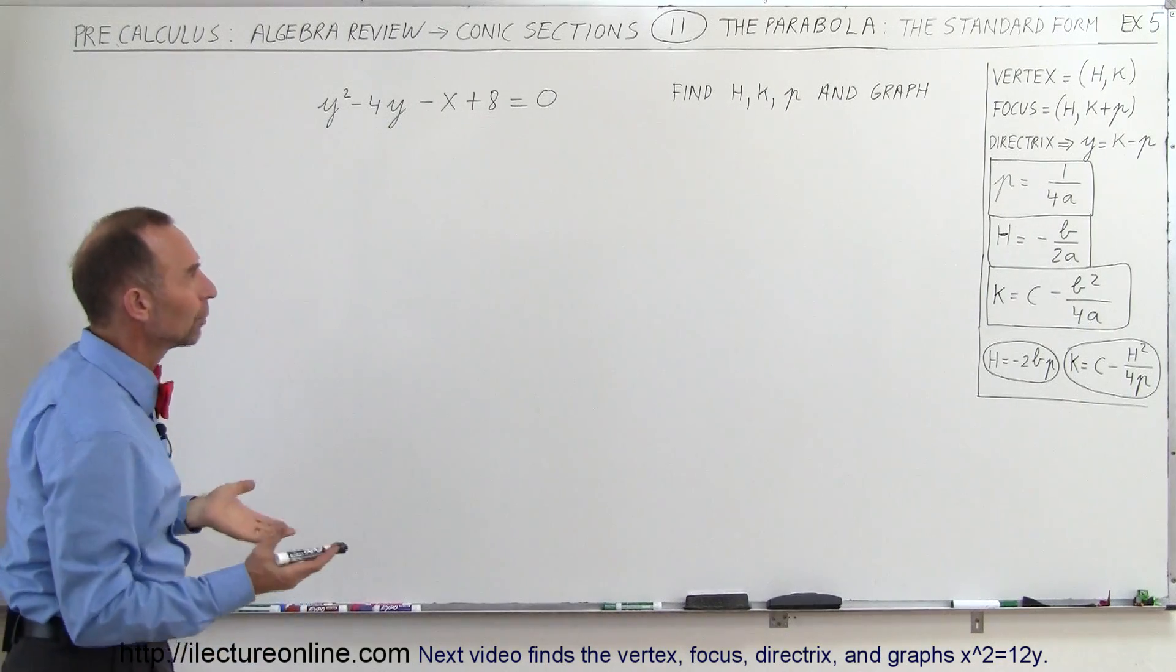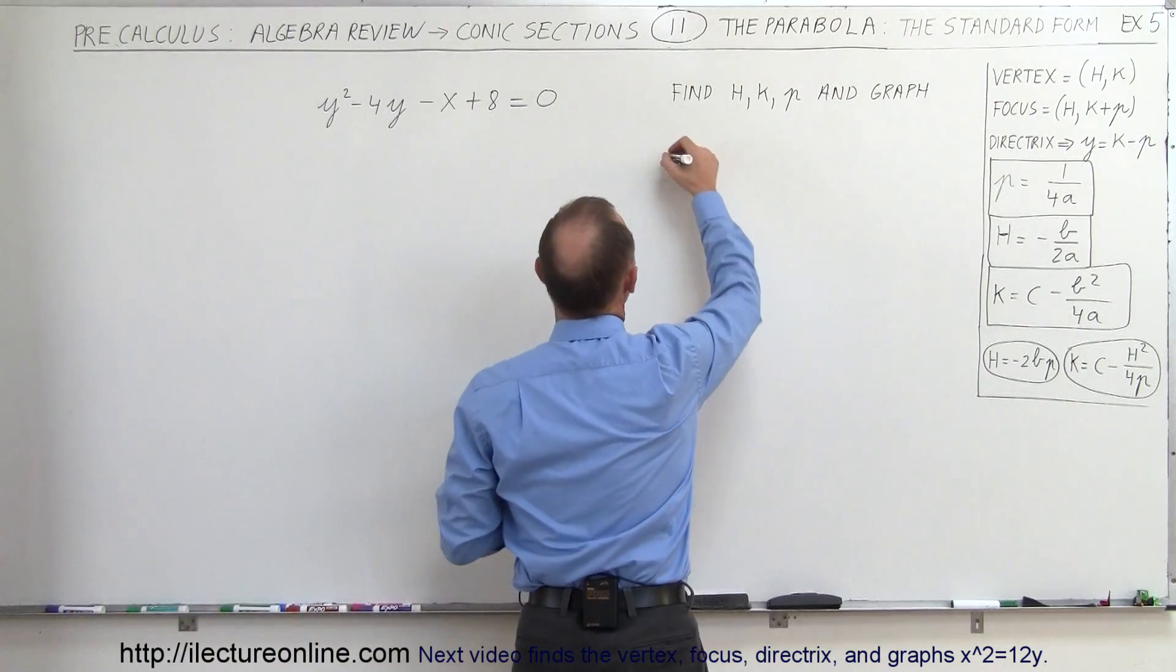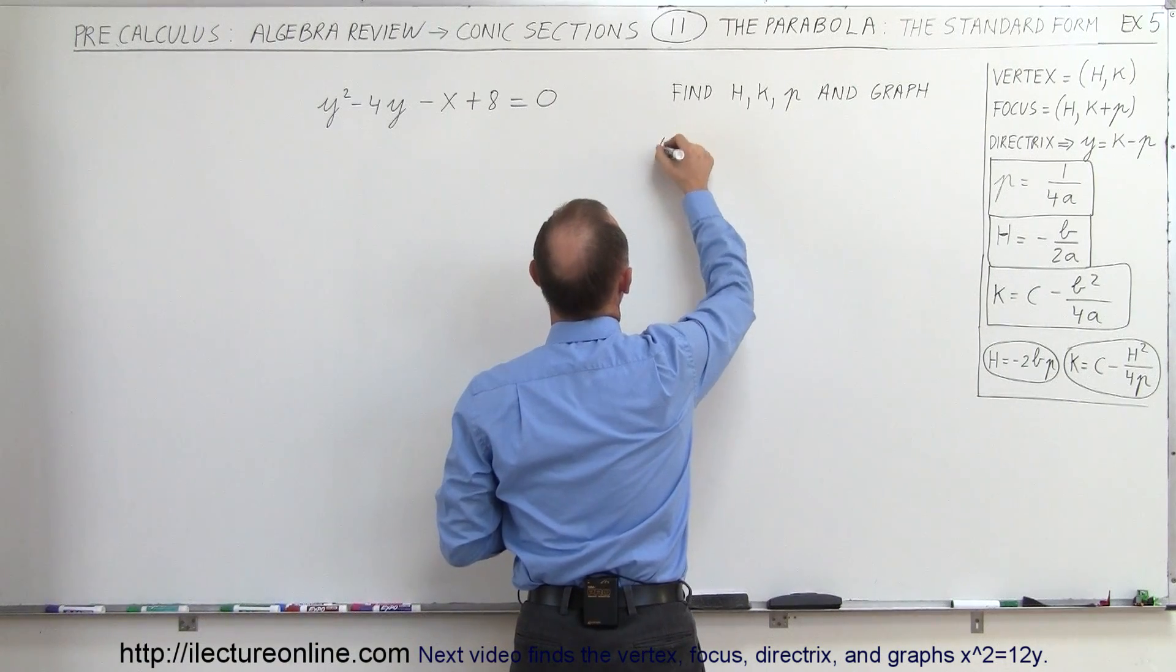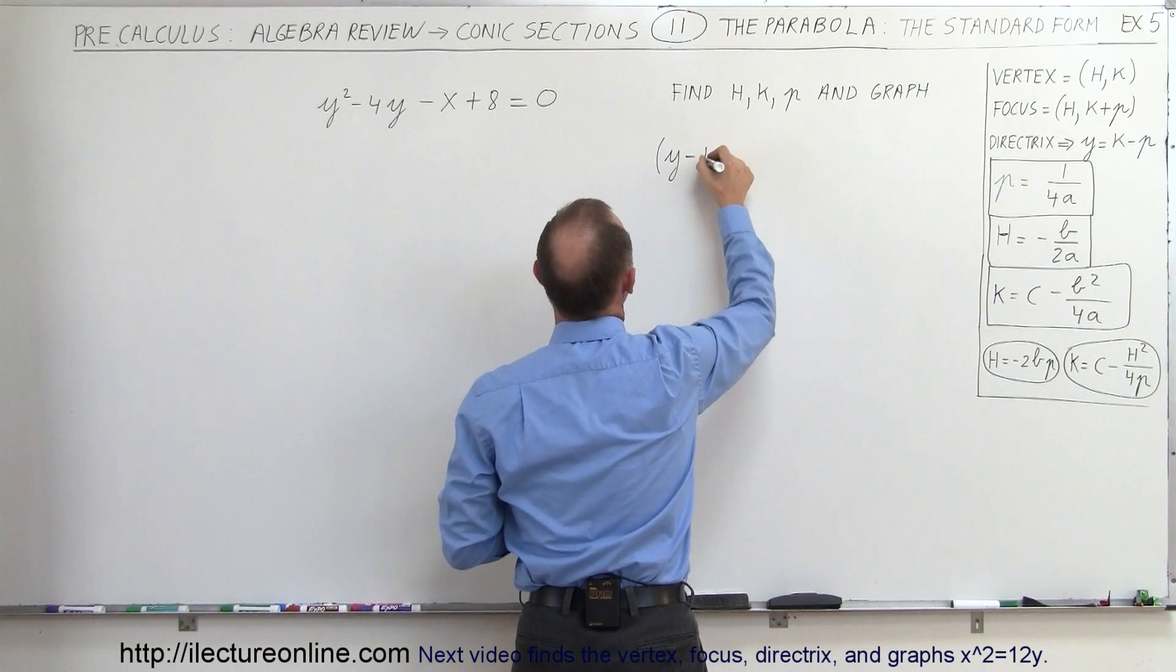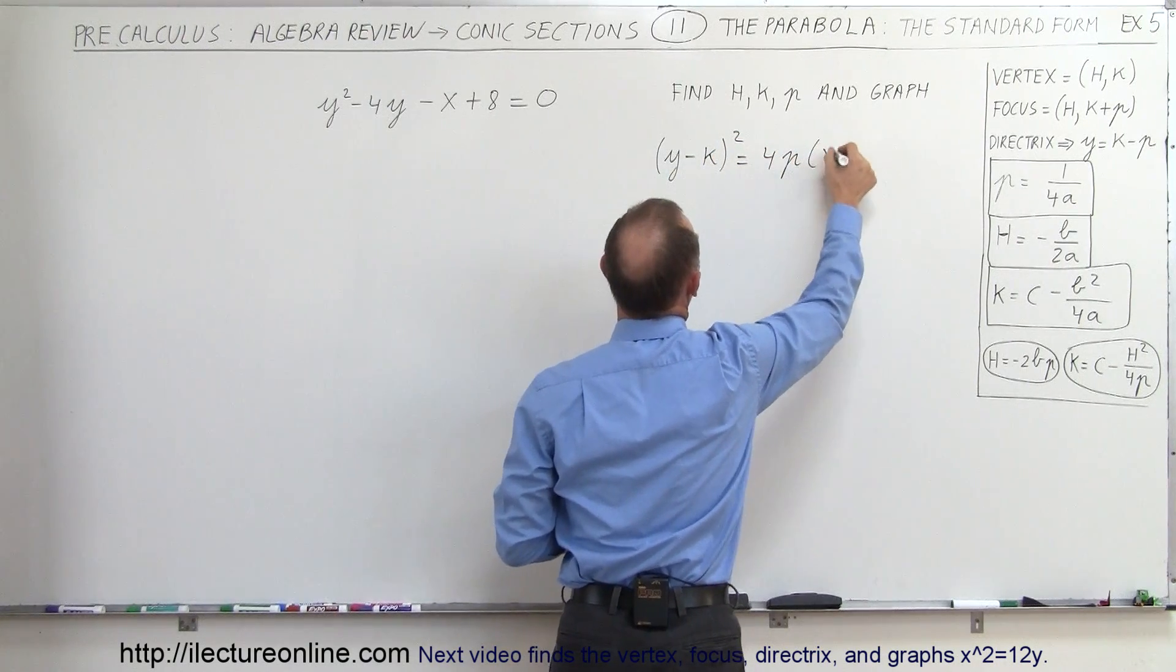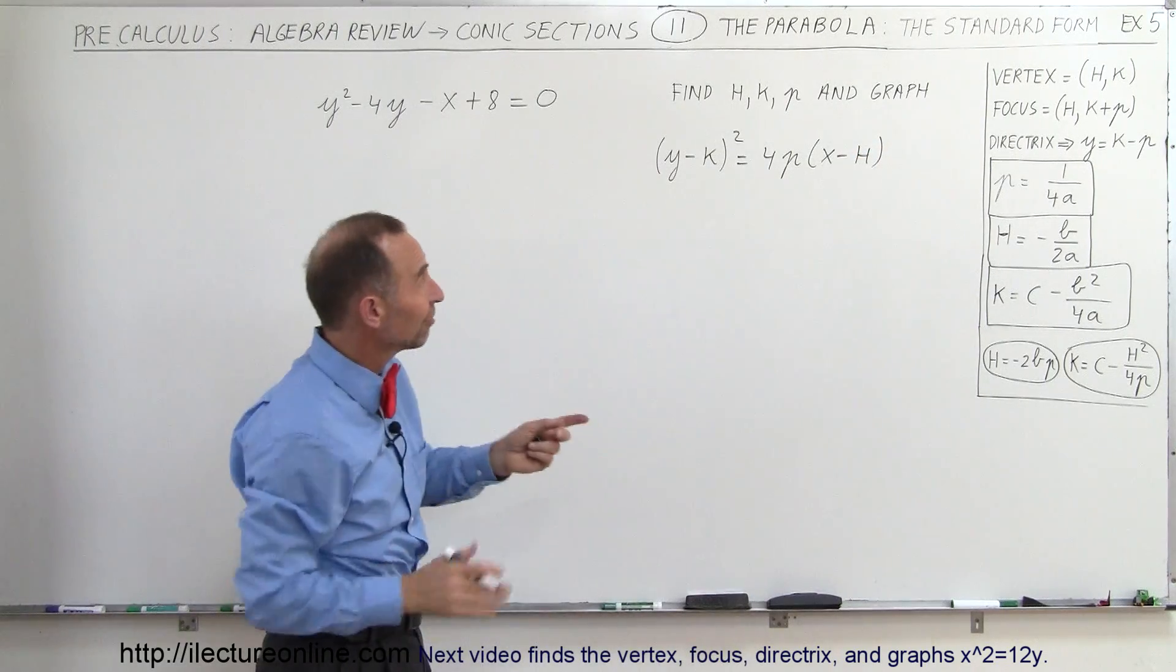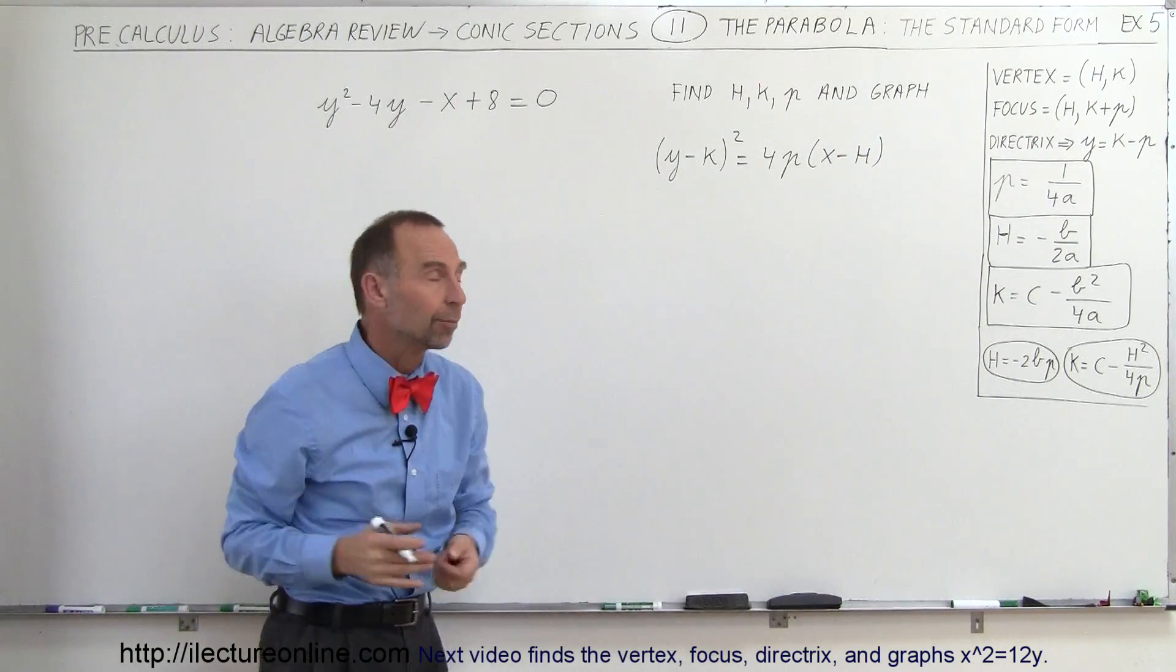So how do we find that? Well, we're going to put it into the standard form. The standard form is going to look like this where we have (y - k)² equals 4p times (x - h). So that's the standard form we want it in. That way we can find h, k, and p and graph the parabola.